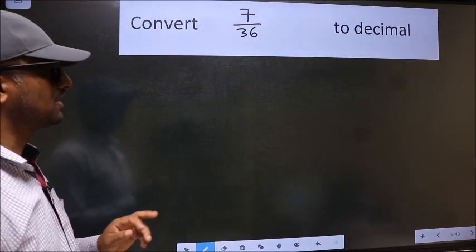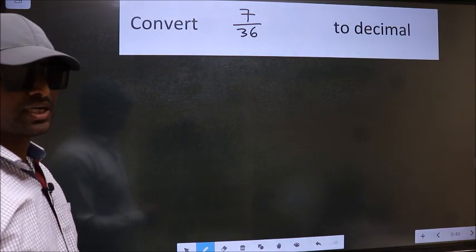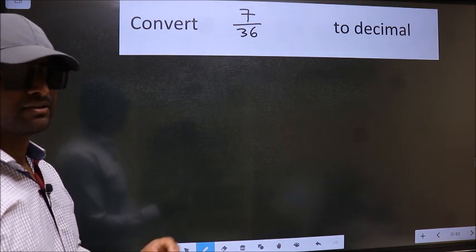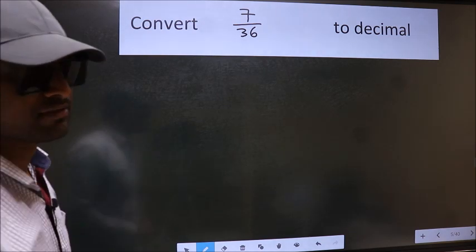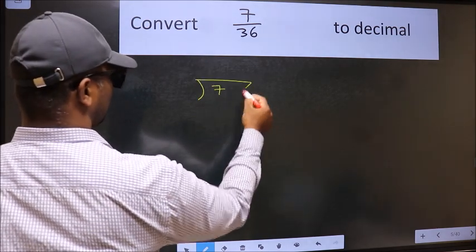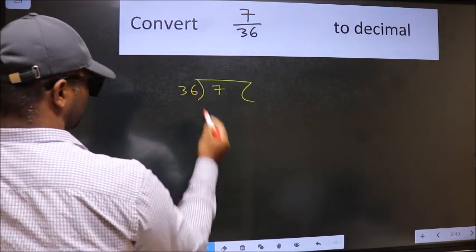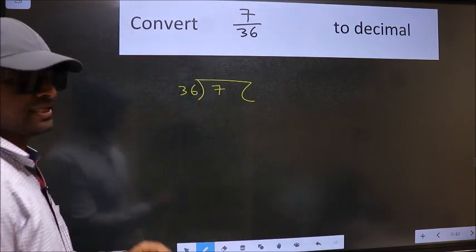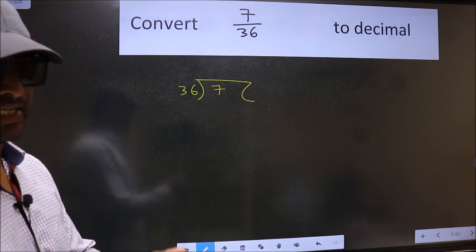Convert 7 by 36 to decimal. To convert to decimal, we have to divide. And to divide, we should frame it in this way: 7 here and 36 here. This is your step 1. Next.